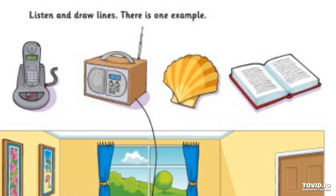Now listen to part two again. One. Is this your friend in the picture with you? Yes, it is. What's his name? His name's Alex. How do you spell that? A-L-E-X. Two. Is he in your class at school? Yes. We're in class eight. Sorry? In class eight. And we've got a great teacher.